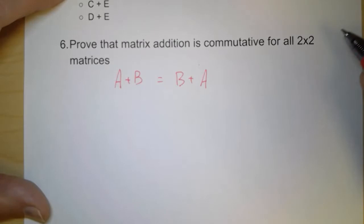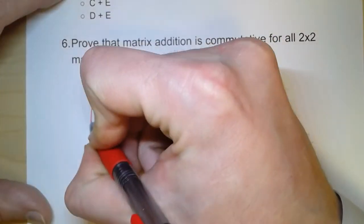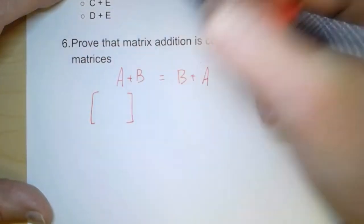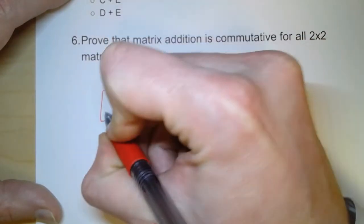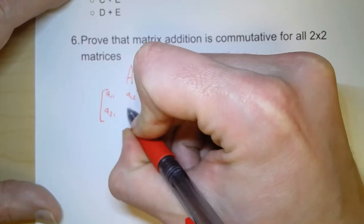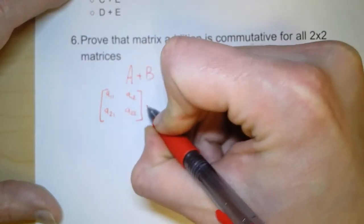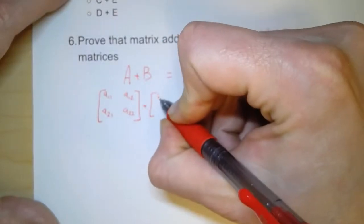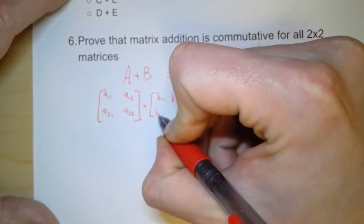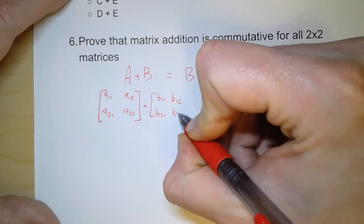Now we say that this is a two by two matrix. So here I'm going to use for matrix A. And I'm going to fill in the numbers. A11, A12, A21, A22. And then I'm going to add matrix B. And that's B11, B12, B21, B22.